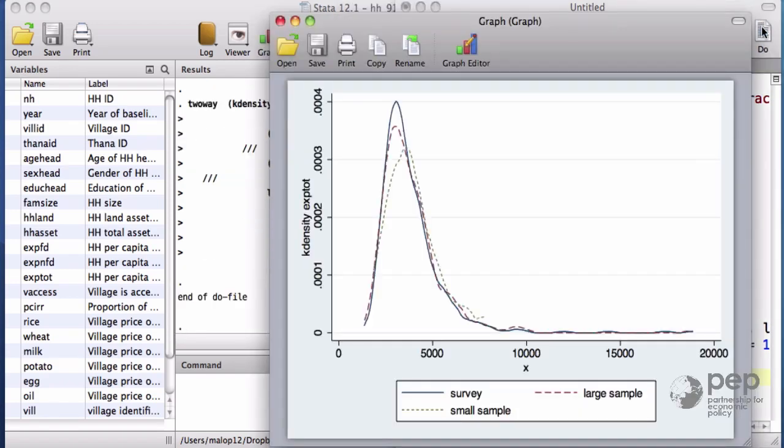The solid blue line comes from the survey data. The red dashed line comes from the large experimental sample with 300, and it's quite similar. Then the green line comes from the small experimental sample, which does not fit the survey sample very well.